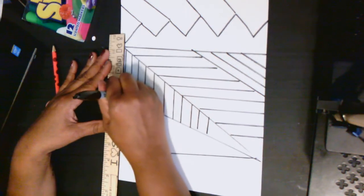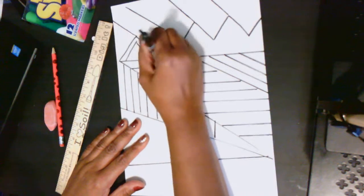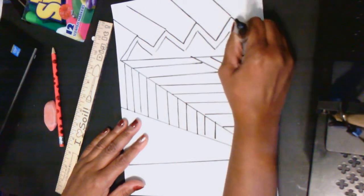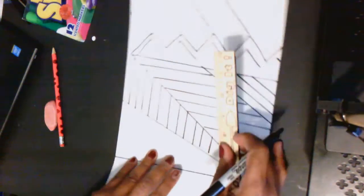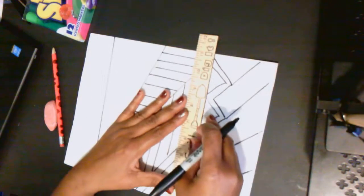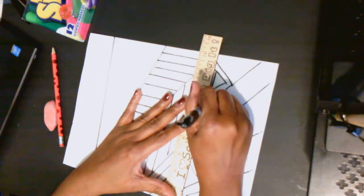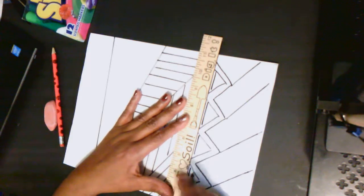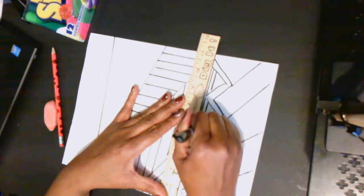Once you have all your lines in place, then you are going to go back and fill in each line with a different bright color. Now, after spending all this time working on your line design, would it make sense to just scribble all over your paper? No. You want to really take your time and color in each stripe a different color.